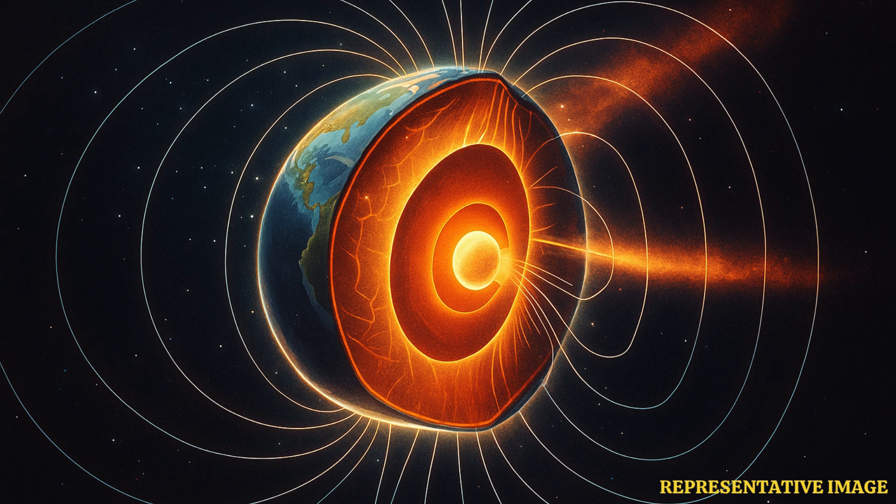Earth's magnetic field is created by the molten iron in Earth's outer core. As it swirls around at a depth of thousands of kilometers, it creates a protective zone around the planet that protects us from the harmful cosmic radiation and the harmful particles unleashed by the Sun. But it doesn't generate an equal layer everywhere.